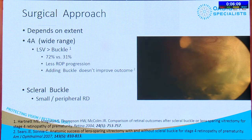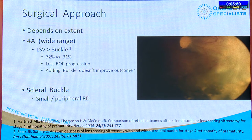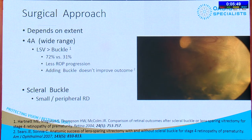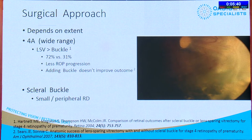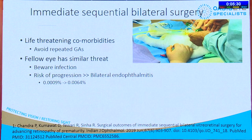The surgical approach depends on extent. Stage 4A is a wide range — very mild cases with only one or two clock hours, up to five, six, or seven clock hours. You can consider a lens-sparing vitrectomy or a buckle. A study by Hartnett showed that with a lens-sparing vitrectomy you get less ROP progression, and adding a buckle sometimes doesn't improve outcomes. A small 4A scleral buckle may be indicated for a very localized peripheral detachment. These children have other comorbidities, so you want to avoid repeated GA — immediate sequential bilateral surgery is an option.